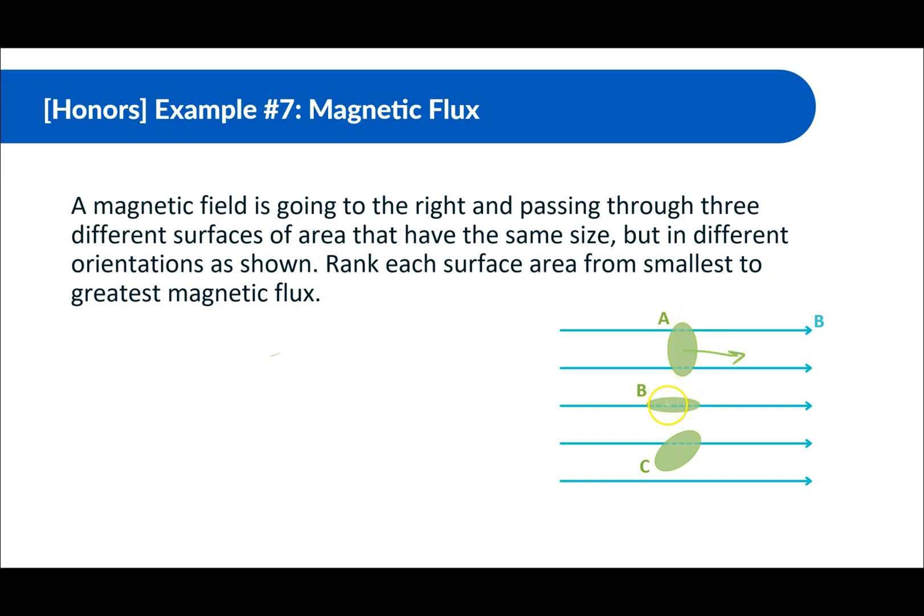Well, I guess let's make the normal for each of these. A is going to look something like this. B is going to look like this. And C is going to look something like this. So we should know from the beginning, this is a 90 degree angle. So B is going to be the smallest. And then C, this is going to be a 30 degree angle or 45 degree angle or something. So that's going to be small. And A is going to be the biggest because it's going in the same direction.